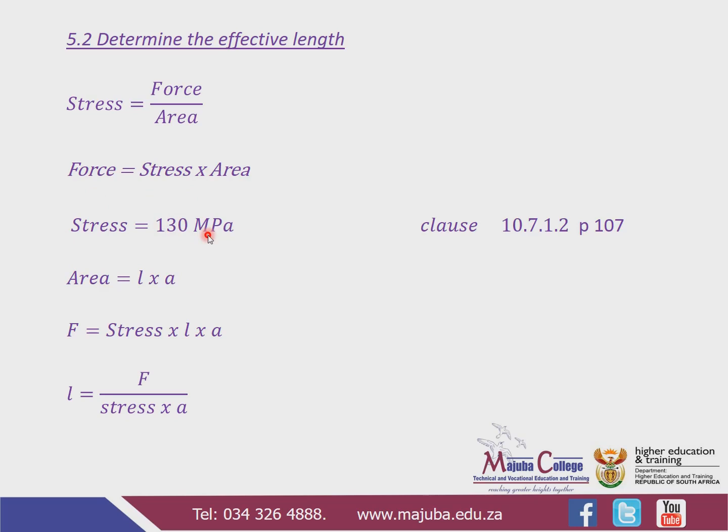We will make force the subject of the formula by cross-multiplying, so force equals stress multiplied by area. The stress is 180 MPa. We get that from clause 10.7.1.2, which is on page 107 of your book. It states that the allowable stress in a fillet weld shall be taken as 180 MPa for grade 43 steel, and 135 MPa for grade 300W steel. Since the grade of the steel is 43, the allowable stress is 180 MPa.